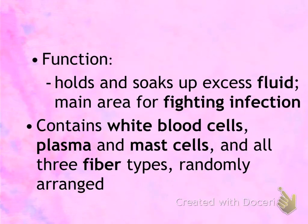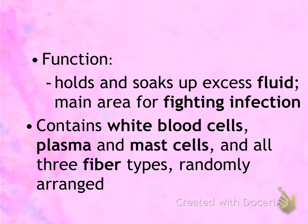Functions of loose connective tissue include soaking up any excess fluid, especially during an infection where organs are producing a lot more fluid. Because loose connective tissue contains many white blood cells, it also helps in fighting off infection. Other cell types found inside include plasma cells, which form antibodies during infection, and mast cells, which make histamine during an allergic reaction.